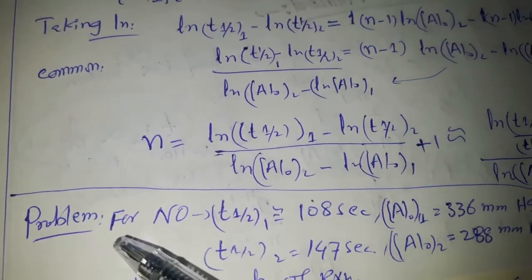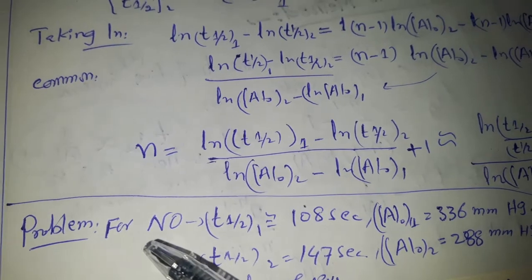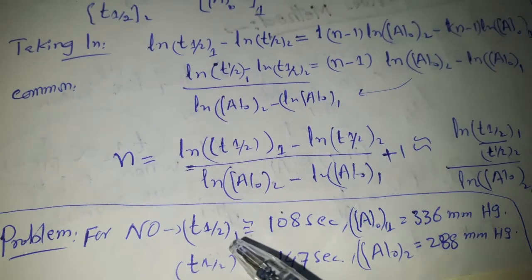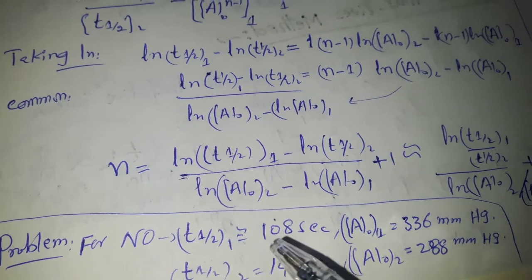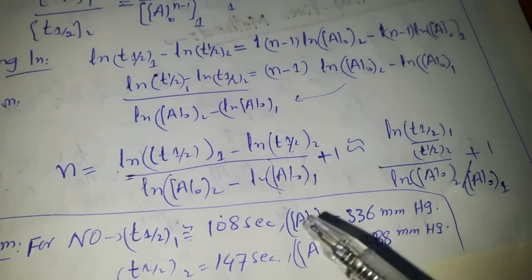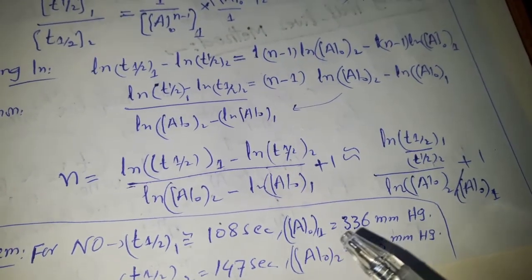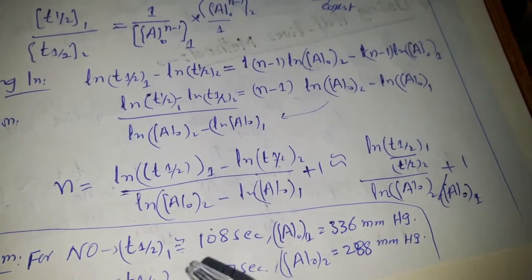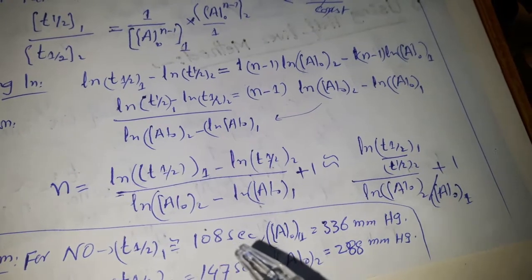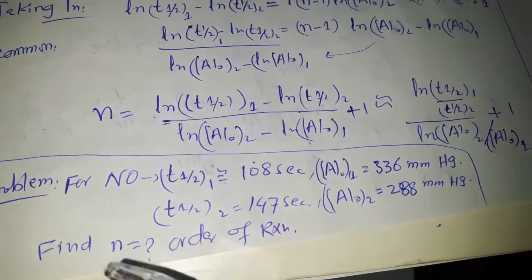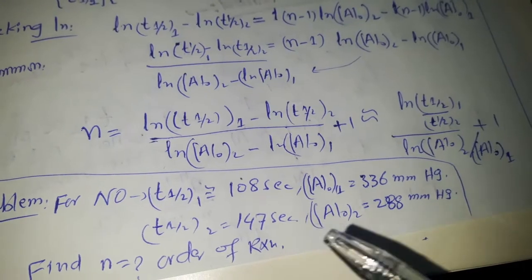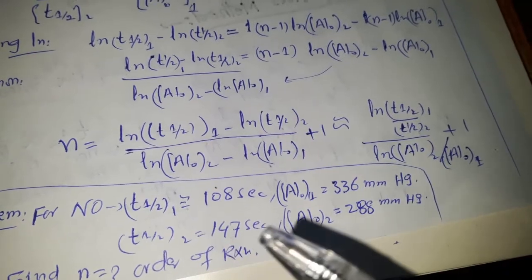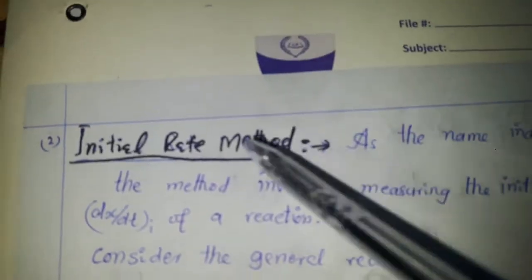Here is an example using nitric oxide. The concentration is given in terms of partial pressure: for the first half-life, the initial partial pressure is 366 mmHg and the half-life is 10108 seconds; for the second half-life, the initial partial pressure is 147 mmHg with a different half-life value.